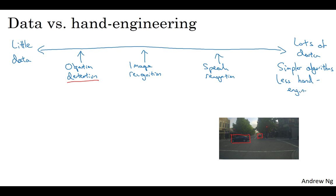There's just less needing to carefully design features for the problem, but instead, you can have a giant neural network, even a simpler architecture, and have a neural network just learn whatever it wants to learn, when you have a lot of data.